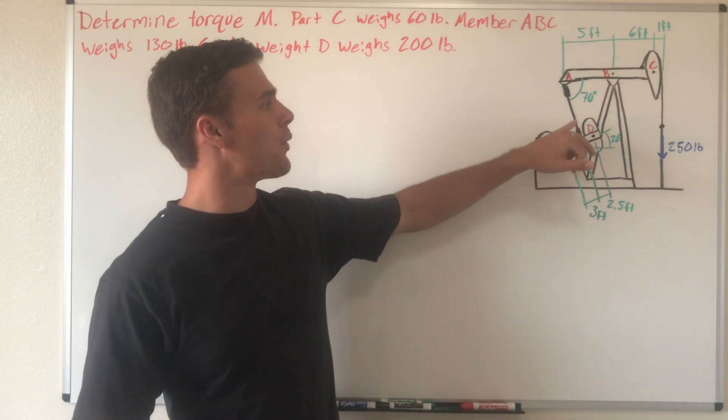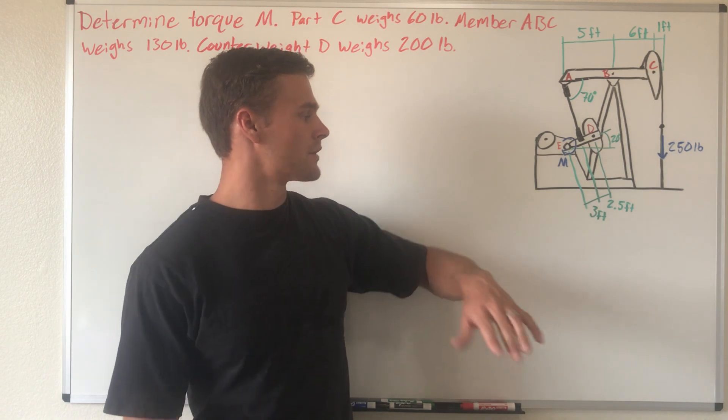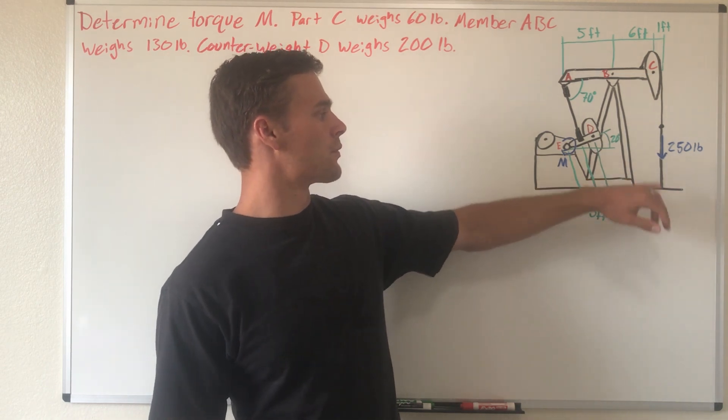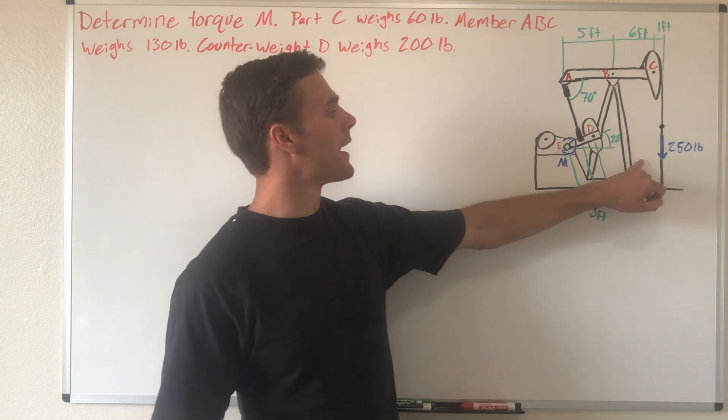What we have here is an oil pump where when member ABC is horizontal, the force of the rod pulling the oil out of the ground is 250 pounds.